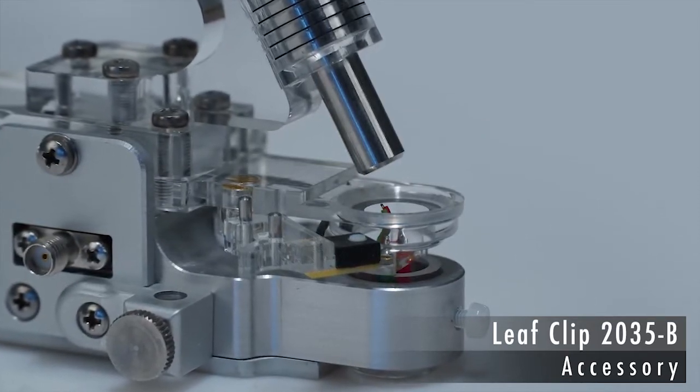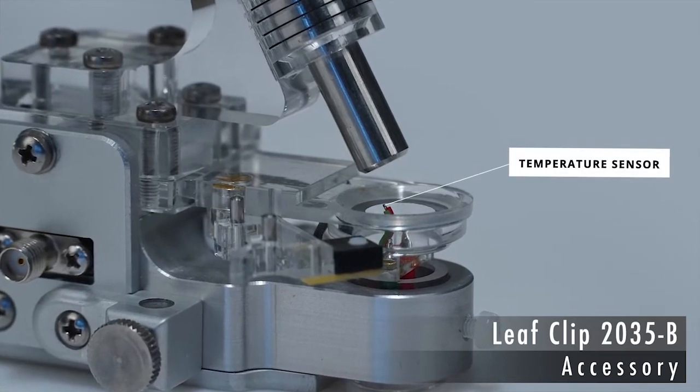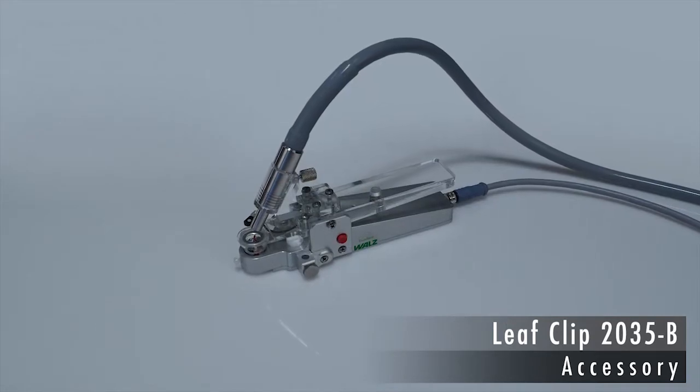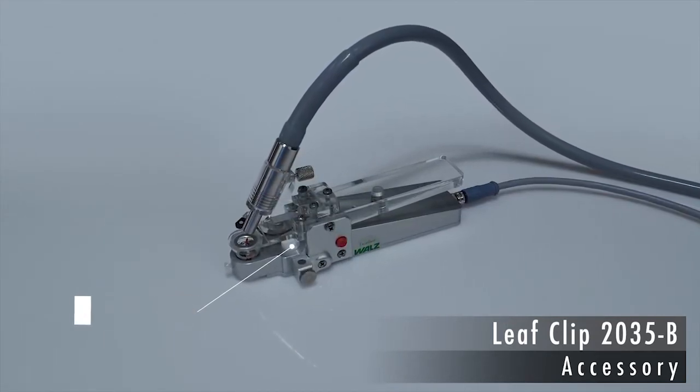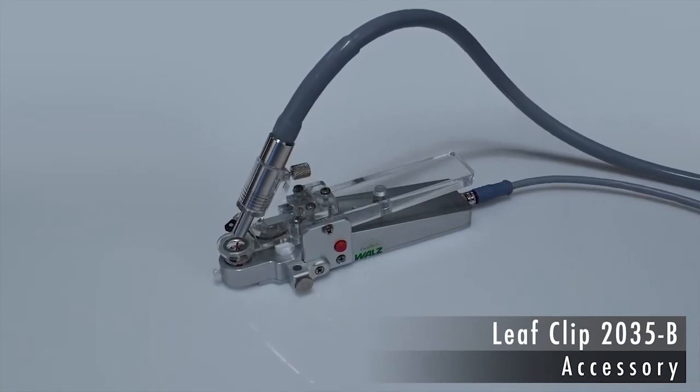At the same time, the temperature of the leaf is measured using a thermocouple. The field clip also features a humidity sensor to monitor air moisture. Air moisture affects leaf photosynthesis by modulating stomatal opening.